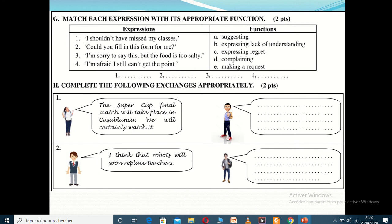The last task in the Language component asks you to complete the following exchanges appropriately. You are given a situation — for example, 'The Super Cup final match will take place in Casablanca, we will certainly watch it' — and you have to respond. You are free to use any function, not just the ones listed. Just make your response suitable and appropriate to the exchange given, and make it meaningful.